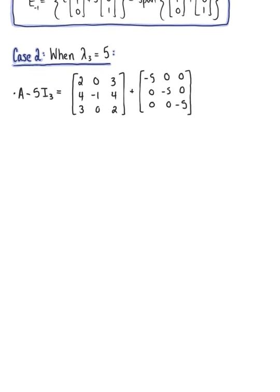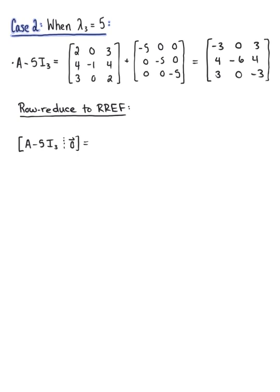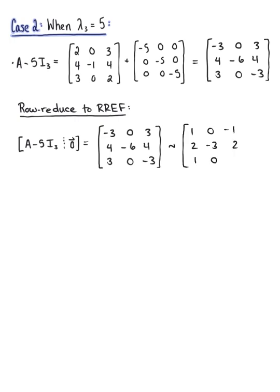Now that we have this matrix, we are ready to row-reduce. Dividing the first row by -3 gives [1, 0, -1]; dividing the second row by 2 gives [2, -3, 2]; and dividing the third row by 3 gives [1, 0, -1]. Taking the first pivot position and eliminating entries below it by doing -2 times the first row plus the second row, and minus the first row plus the third row, we get [[1, 0, -1], [0, -3, 4], [0, 0, 0]].